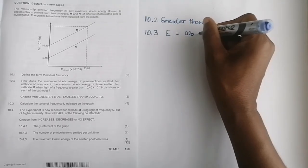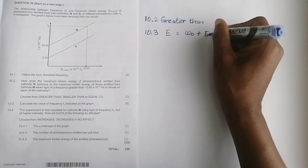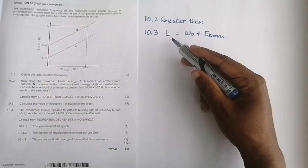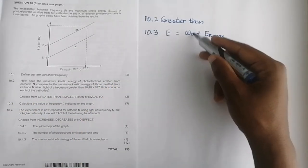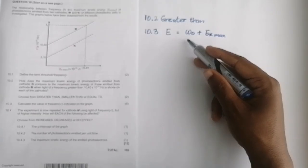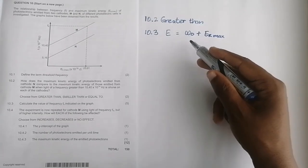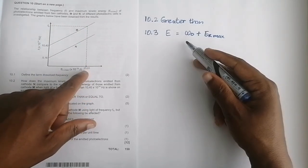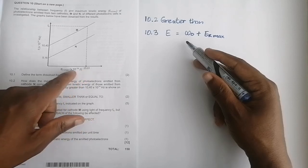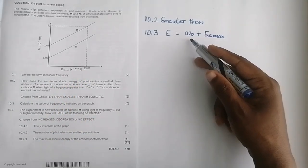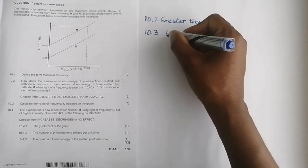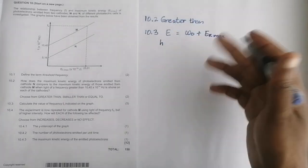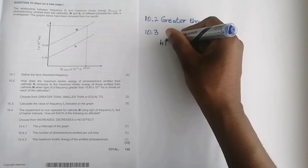E is equal to omega zero plus Ek max. We can work out the work function in this particular case. We're looking for the frequency fx that has to do with the frequency of light when the maximum kinetic energy is 23.01 × 10^-19. Let's break it down. If you still find this confusing, it means you haven't watched our videos on the photoelectric effect—we've made it quite simple.